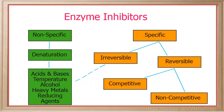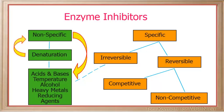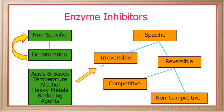Poisons and drugs are examples of enzyme inhibitors. Nonspecific inhibition affects all enzymes in the same way. Non-specific methods of inhibition include any physical or chemical changes which ultimately denature the protein portion of the enzyme and are therefore irreversible.